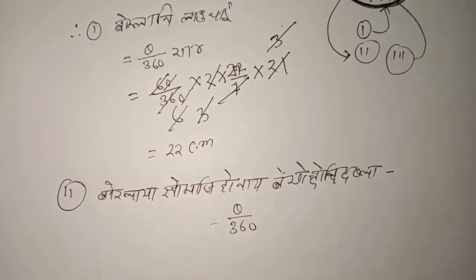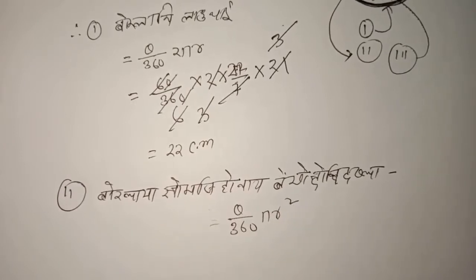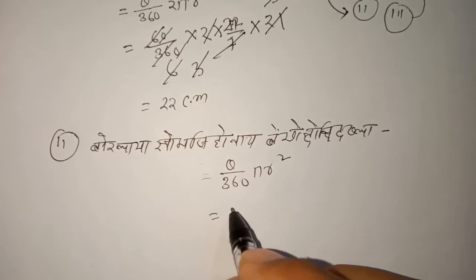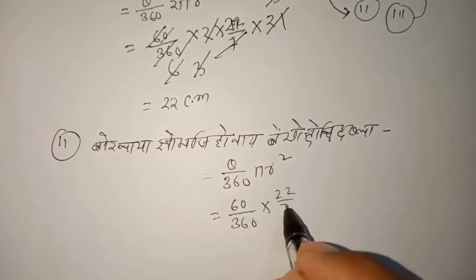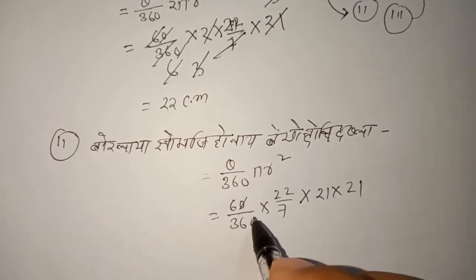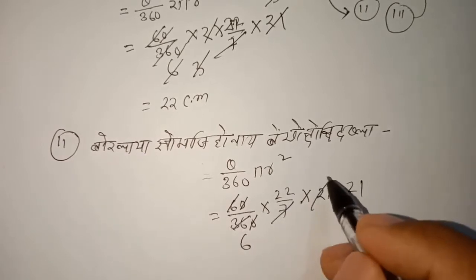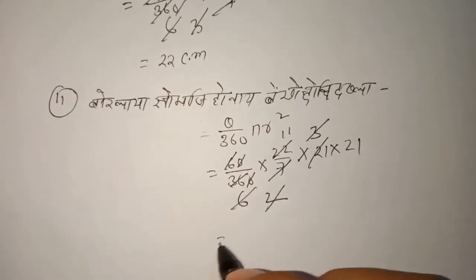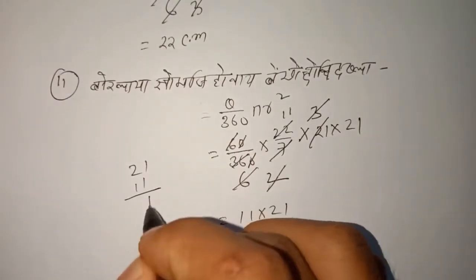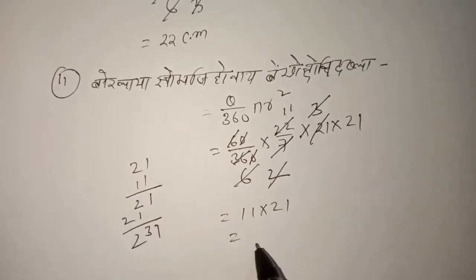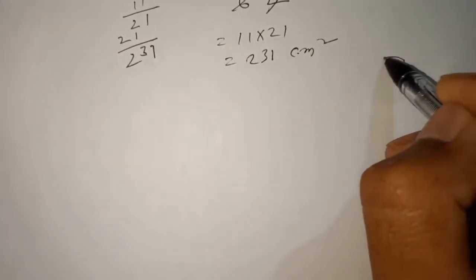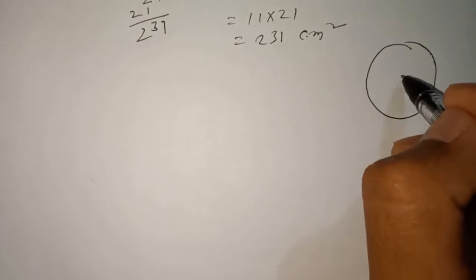For the area of the sector, the formula is theta over 360 times π r squared. Substituting: 60 over 360, times 22/7, times 21 squared — that is 21 into 21. After cancellation, the result is 231 centimeters squared. The next step follows.